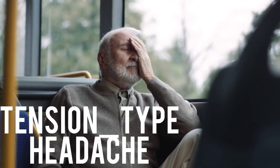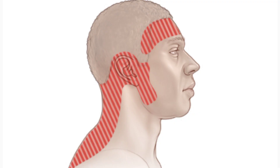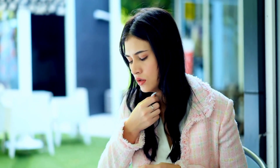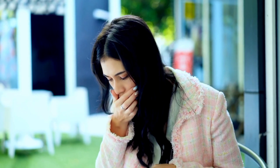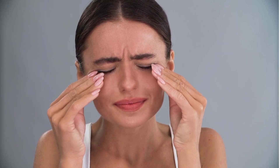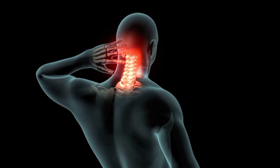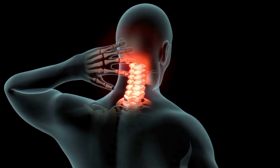Tension type headache. This is a common pain. The areas of pain are the head, neck, and above the ears. As a result of this pain, vomiting may occur along with pain below the eyes. Head and neck remain in pain.